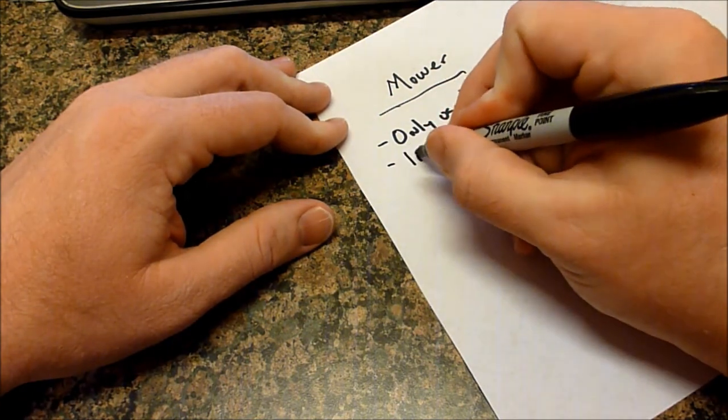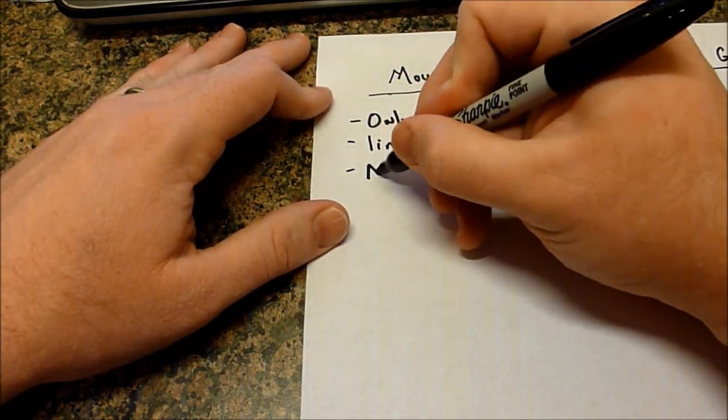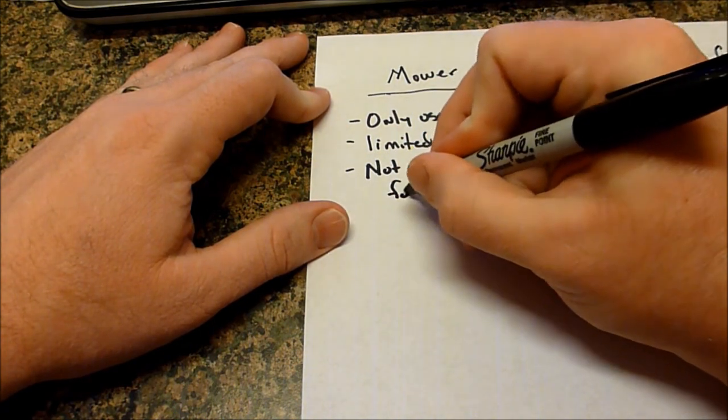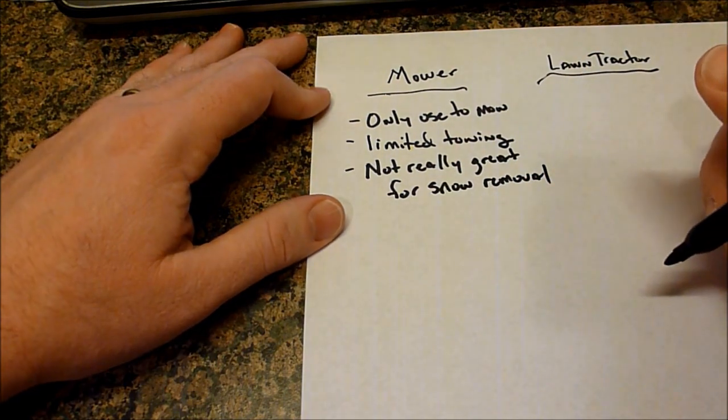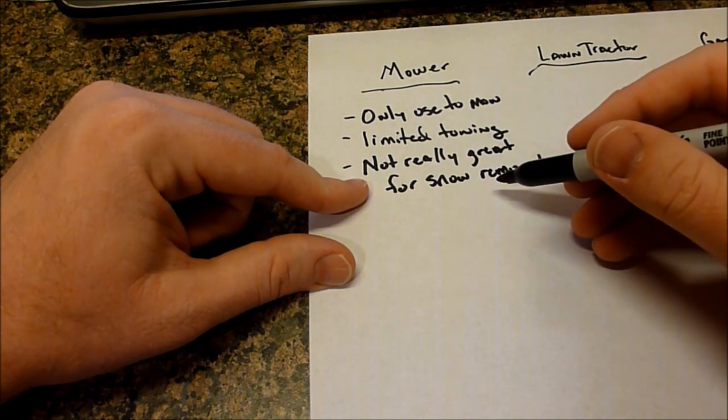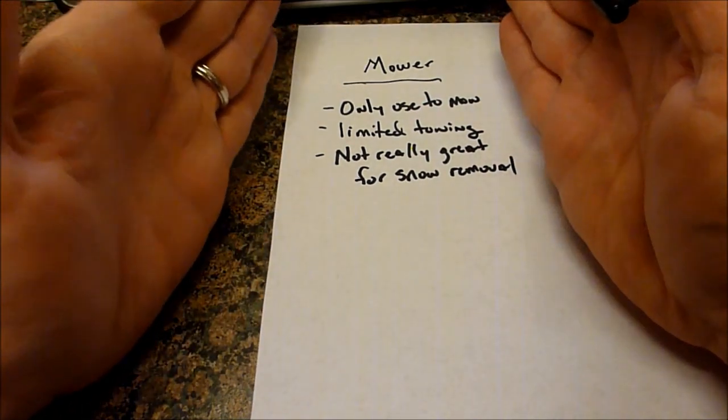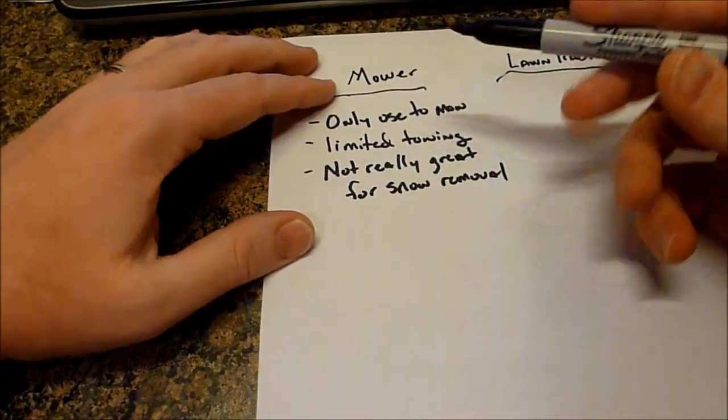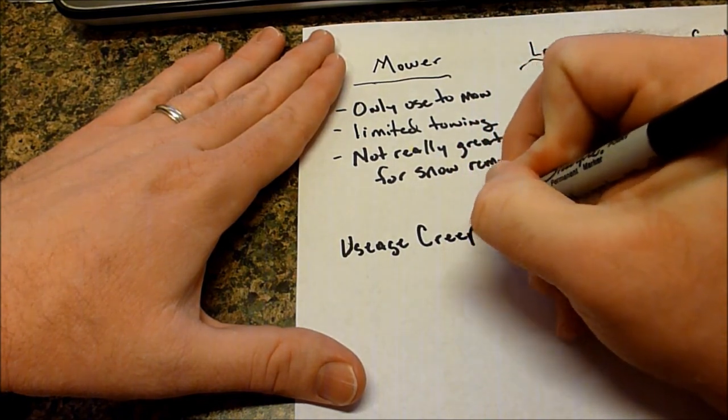So they're only used to mow. They also have limited towing. And they're not really great for snow removal. Now they can do snow removal, but they're not great for snow removal. And I think this is where a lot of people get into troubles with mowers, with only looking at mowers. What they're going to do is they're going to go to the big box stores. They're going to see that these machines are $1500 to $2500. And that's a whole lot cheaper than anything that falls into this category. And so they're going to fall for something, what I call usage creep.